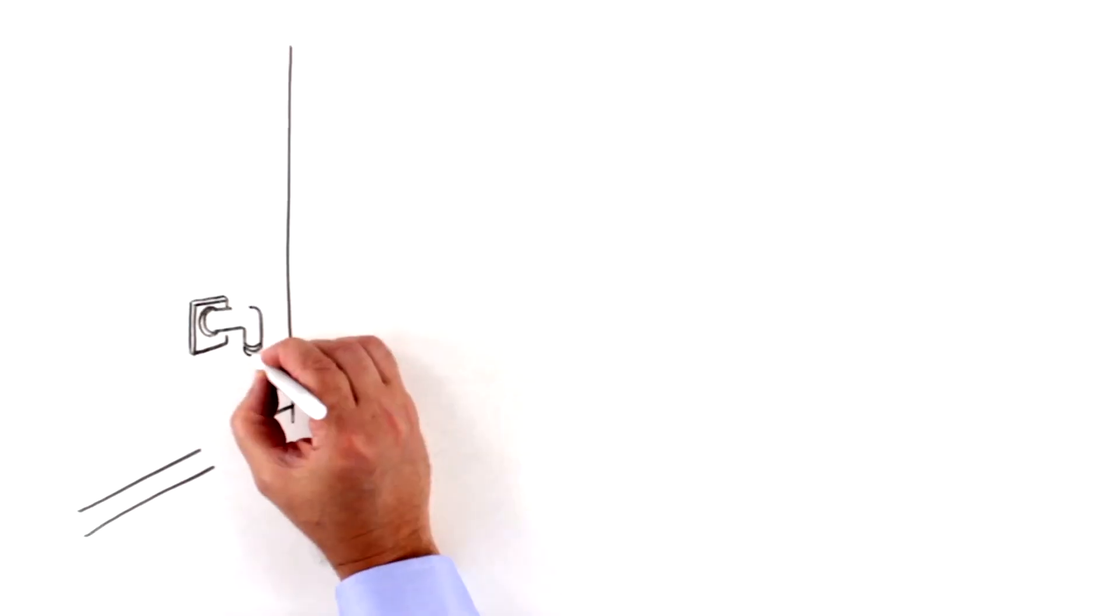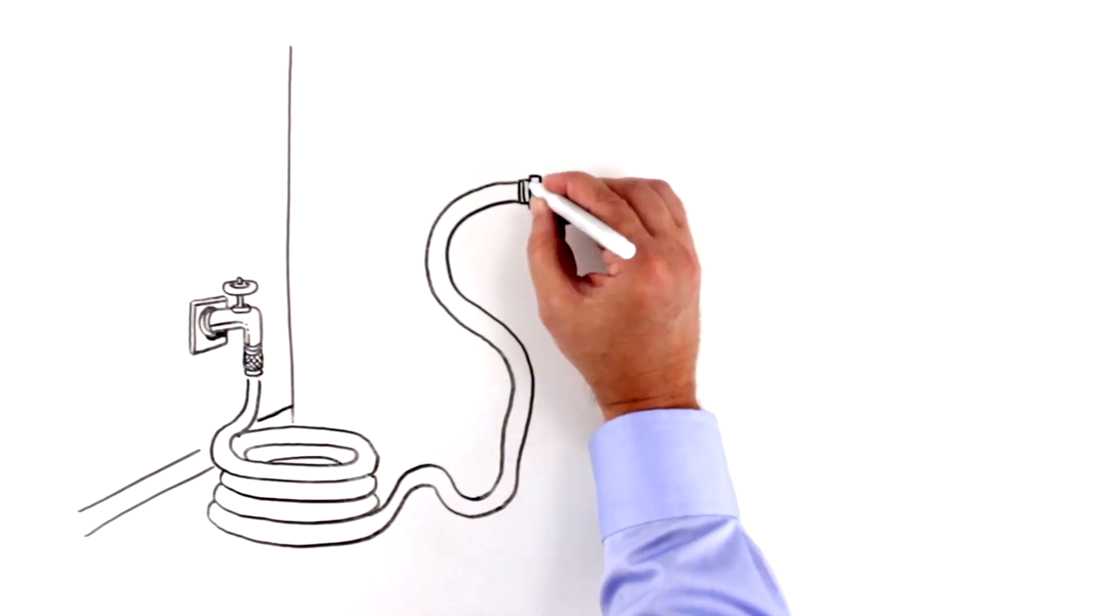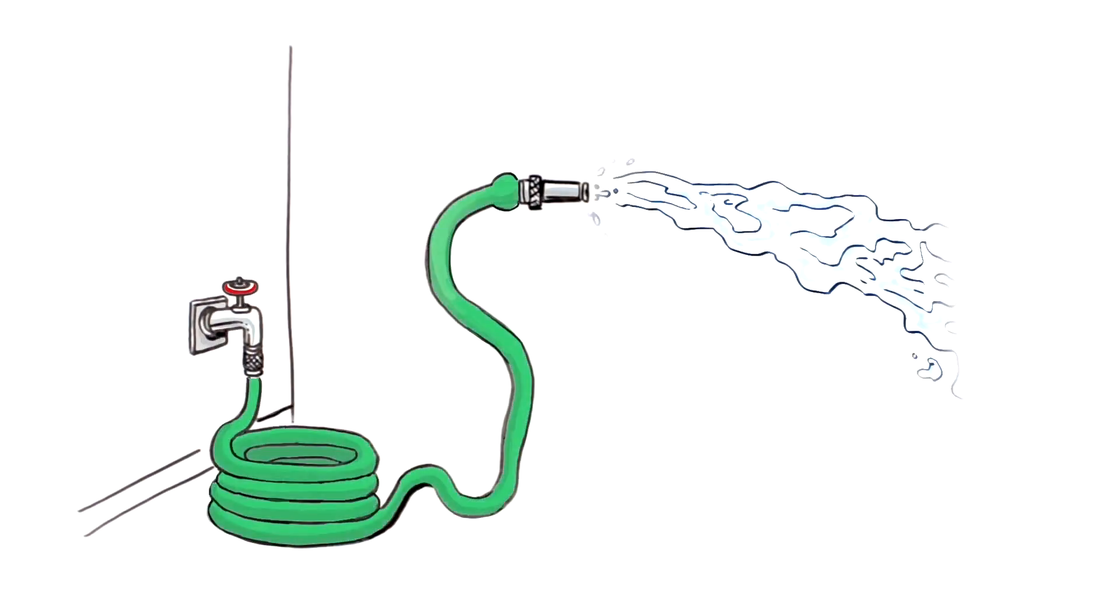Another way to think of this is to imagine a garden hose. The hose is the protective structure of the nerve, and the water is your nerve. When your surgeon freezes your nerve, it's like turning off the water. It temporarily shuts off the flow of pain for that specific nerve.